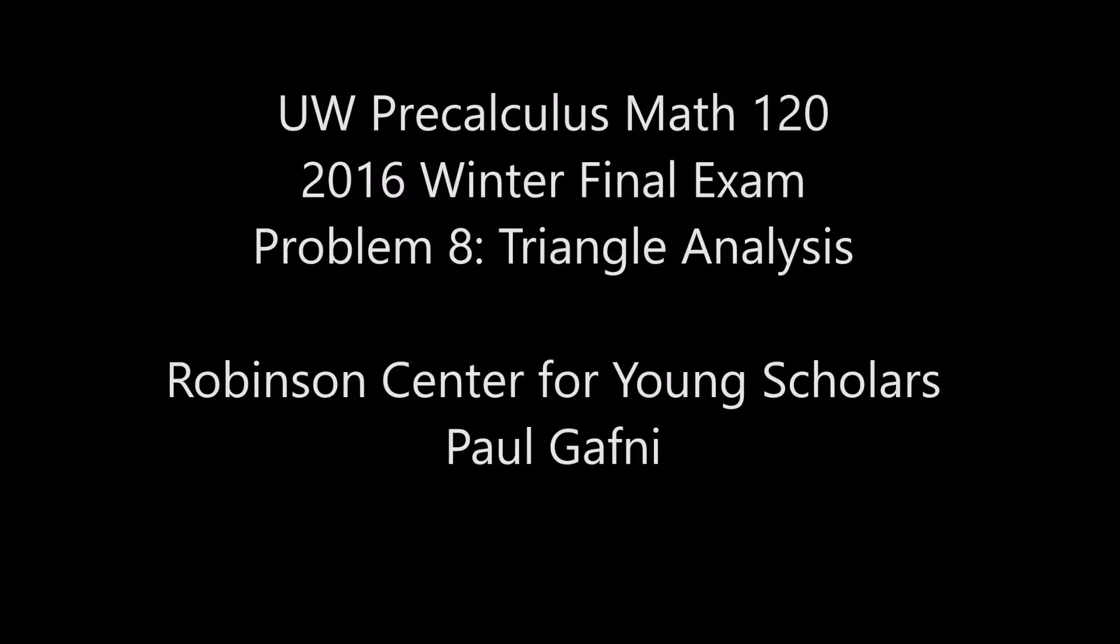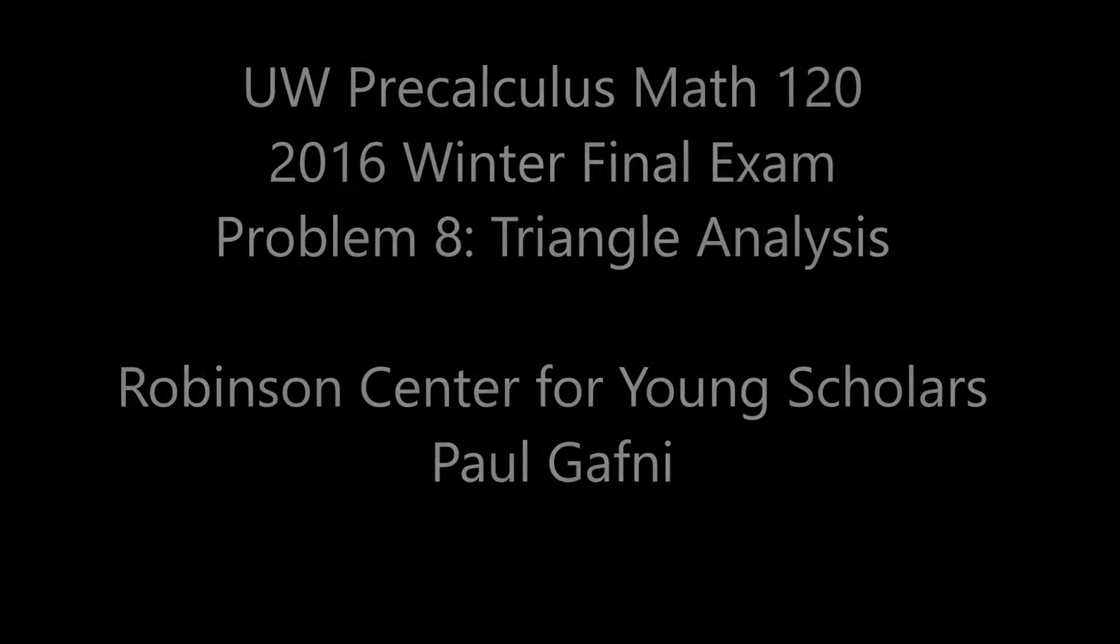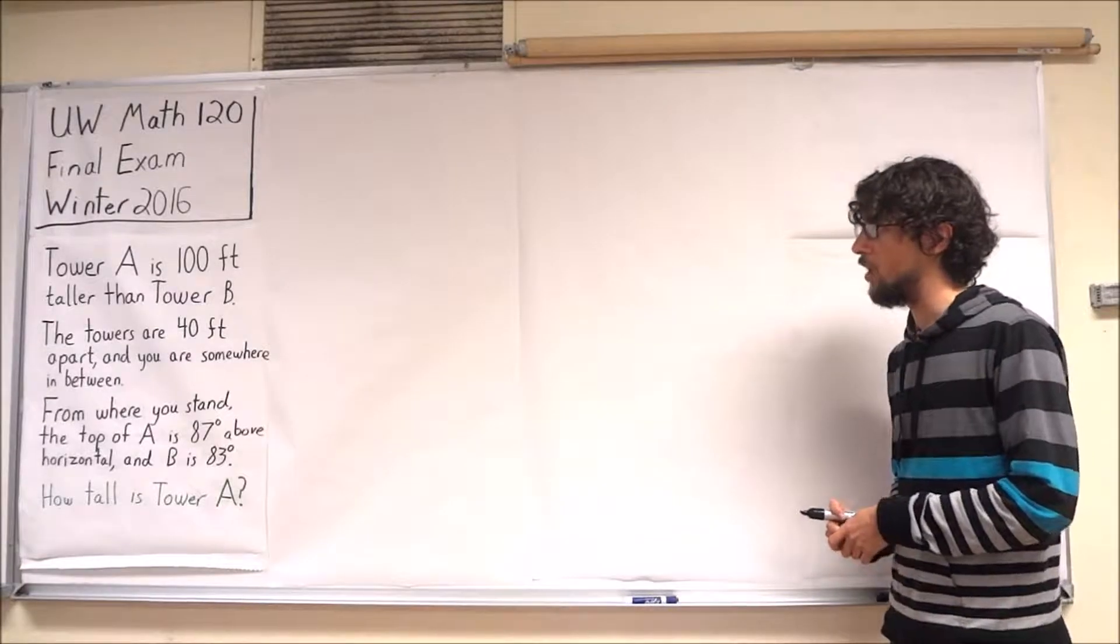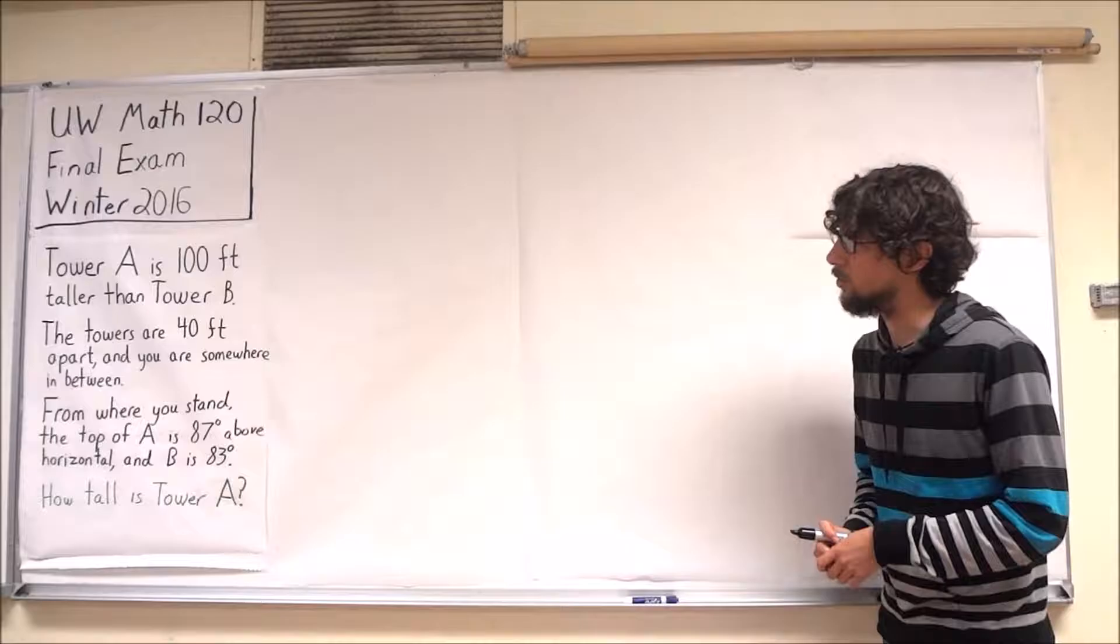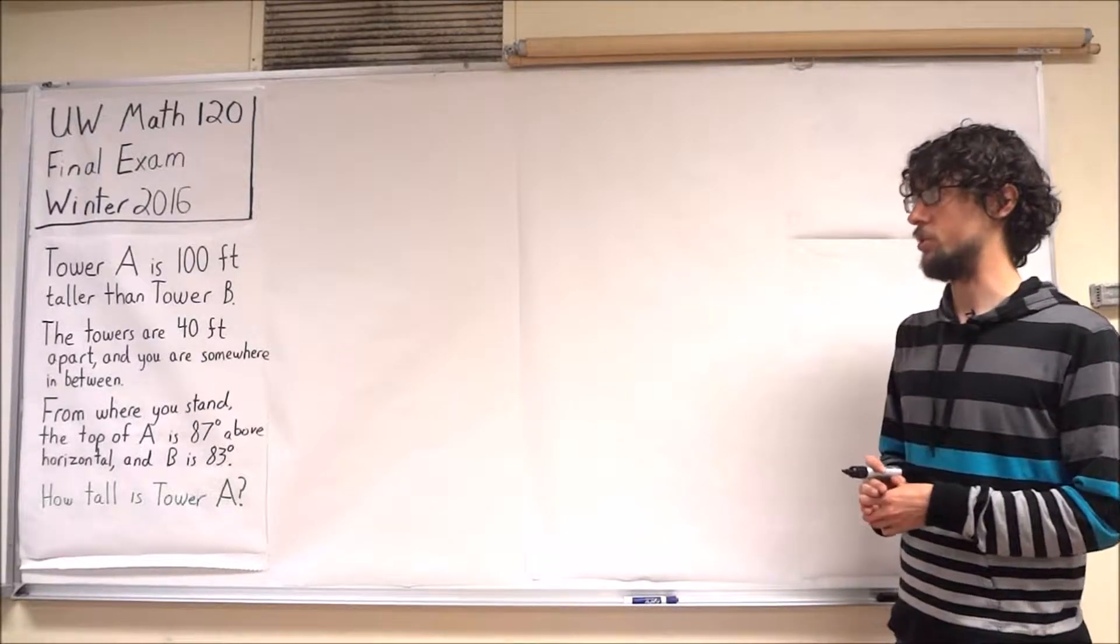This is the University of Washington's Math 120 Pre-Calculus course. We're looking at the eighth question from the winter 2016 final exam. We have a question about some tall towers. This is a kind of triangle analysis trig question.